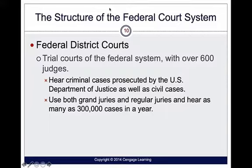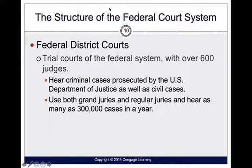Federal courts have over 600 judges who are placed on the bench and able to serve for life. They hear criminal cases prosecuted by the U.S. Department of Justice as well as civil cases. Criminal cases might include kidnapping across state lines, the murder of a federal official, crimes in a federal building, robbing a bank, or transporting drugs or people across the border.